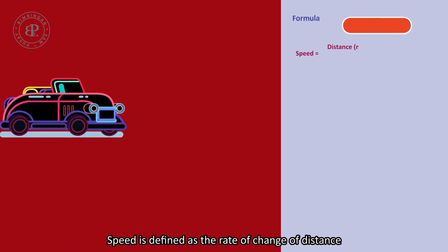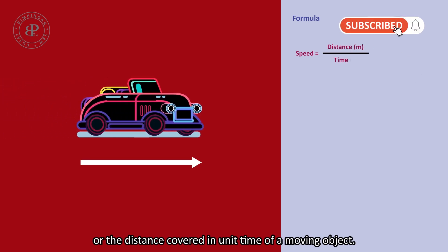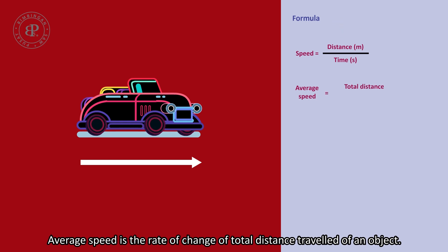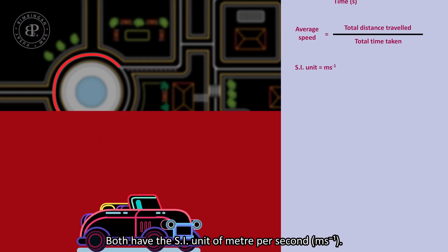Speed is defined as the rate of change of distance, or the distance covered in unit time of a moving object. Average speed is the rate of change of total distance travelled of an object. Both have the SI unit of meter per second.